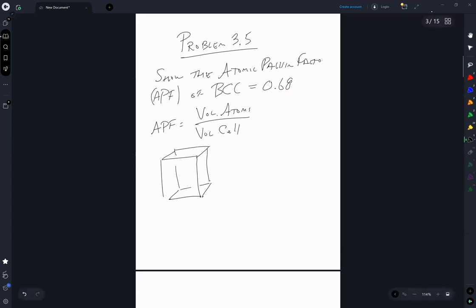So a body centered cubic puts atoms on each corner and an atom in the center. The closest packed direction is the body diagonal. So that has a length of square root of 3a, and it corresponds to 4r.